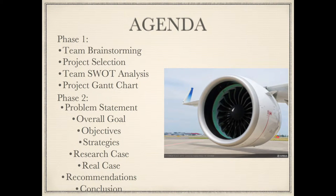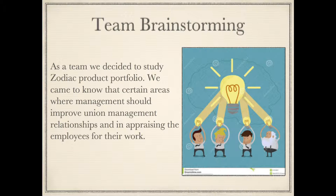Agenda: Phase 1 covers Team Brainstorming, Project Selection, Team SWOT Analysis, and Project Gantt Chart. Phase 2 covers Problem Statement, Overall Goal, Objectives, Strategies, Research Case, Real Case, Recommendations, and Conclusion.